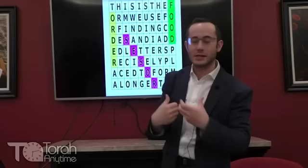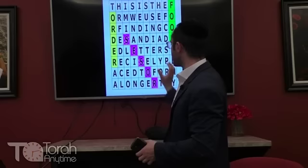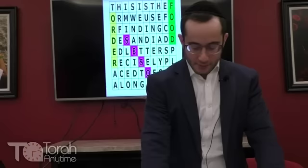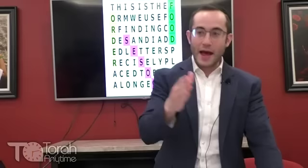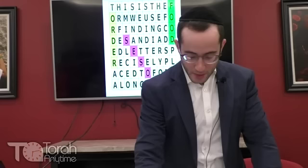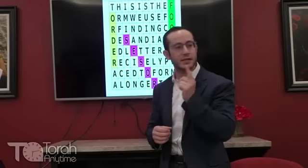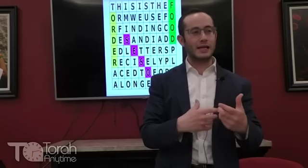Now imagine you open the New York Times and every five letters it spells out your first and last name. You'd think it's a coincidence. But if you open it next week and again — at a five-letter equidistant skip — your name appears, this time with your address too. If this happens for ten weeks in a row, you'll think somebody actually placed it there. The more impressive the code, the more unlikely it happened by chance.